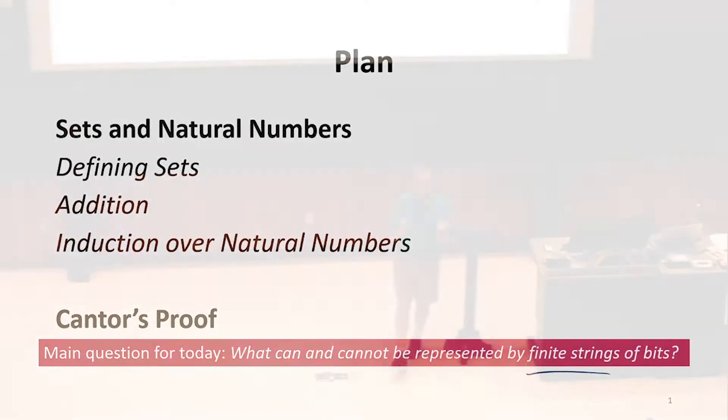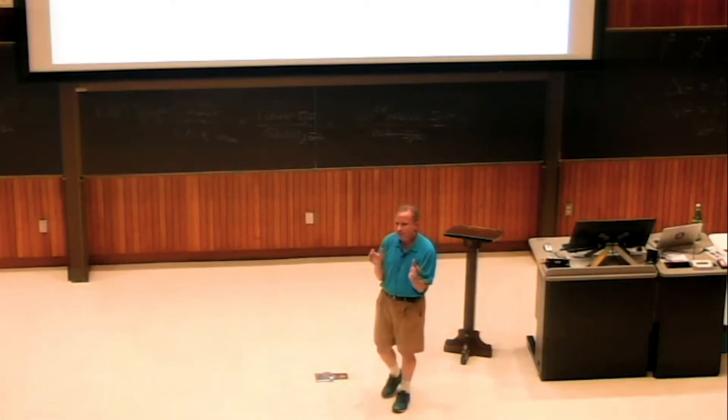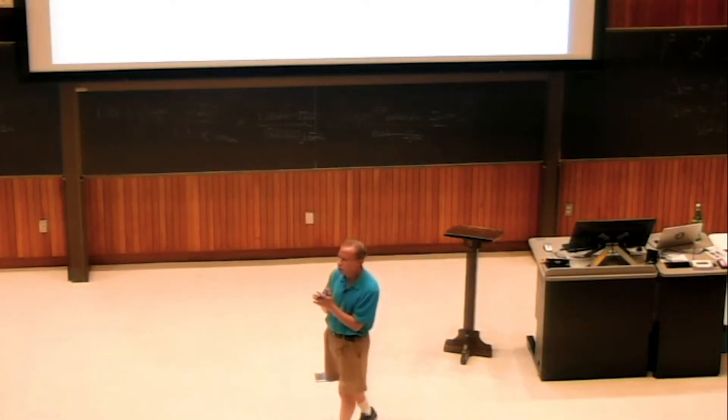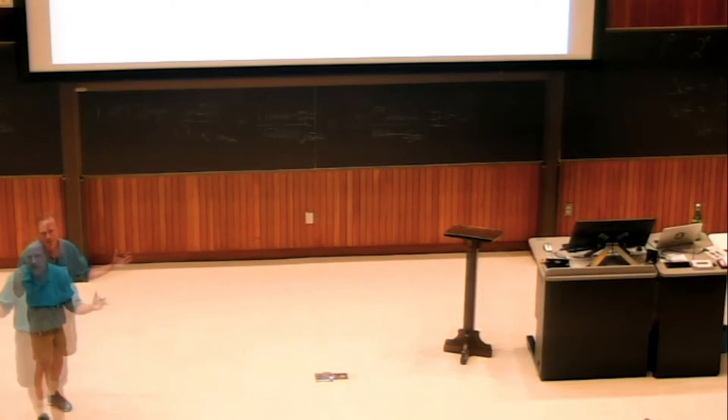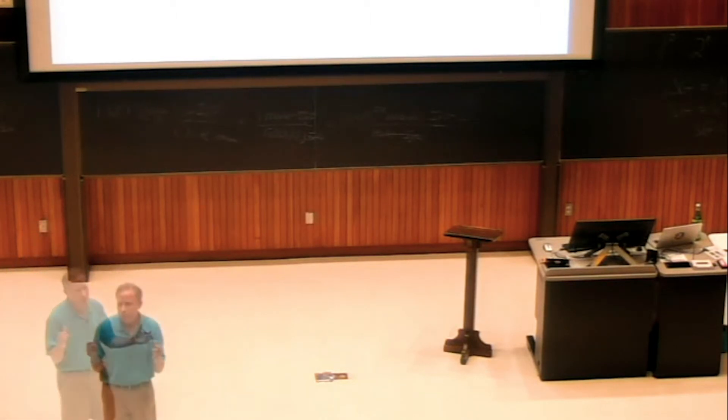We defined natural numbers last class. What about sets? Can we come up with a definition for sets? These are good definitions of what a set is. We understand a set as some collection. It's a collection where we don't care about order. Something can only either be in it or not be in it. There's no count. It's not a bag where we can count the number of times.